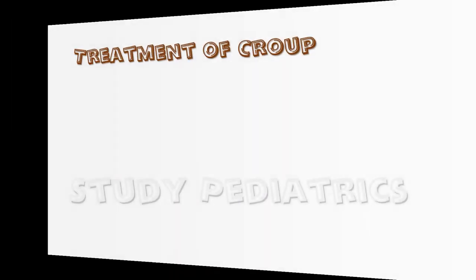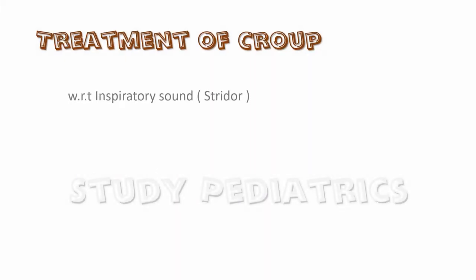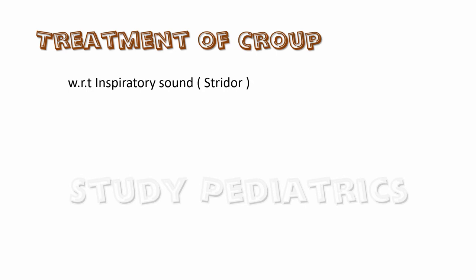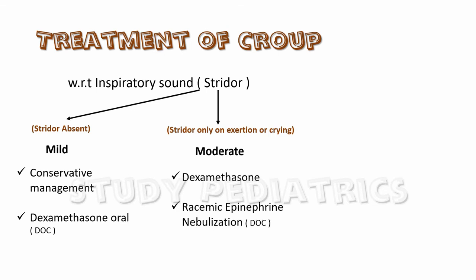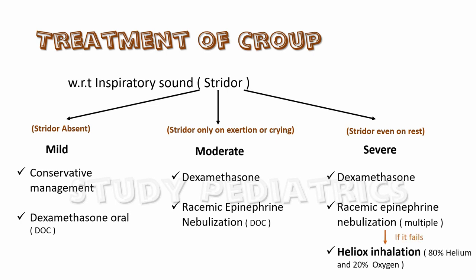The treatment of croup is assessed with respect to the presence of abnormal inspiratory sounds. If absent, we consider croup to be mild and suggest conservative management. Oral dexamethasone can also be given. If stridor occurs only on exertion or crying, we consider it moderate croup and add dexamethasone along with racemic epinephrine nebulization — that is, taking the epinephrine mixture through inhalation. If stridor is present even at rest, severe croup should be suspected and an immediate dose of dexamethasone and racemic epinephrine nebulization should be started. If the patient improves, we can continue with this.